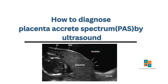Welcome to this video on ultrasound diagnosis of placenta accreta spectrum. Today we will explore the key sonographic features that help in diagnosing placenta accreta spectrum, from placenta lacunae to bladder wall signs and bridging vessels. We will walk through the most important markers to look for. Whether you are a student, resident, or practitioner, this guide will help you build confidence in recognizing the subtle and sometimes life-saving signs of placenta accreta.